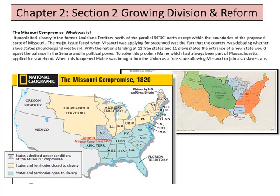To solve this problem, Maine — which had always been part of Massachusetts — applied for statehood as well. Maine was brought into the Union as a free state, allowing Missouri to join as a slave state. We often see some of that balance of power in the way it looks today between political parties rather than states.